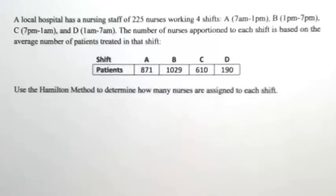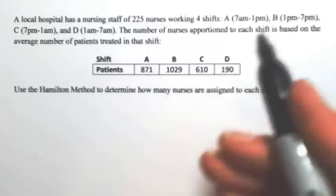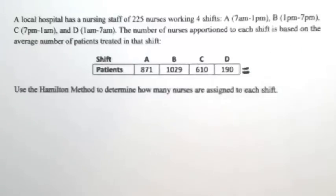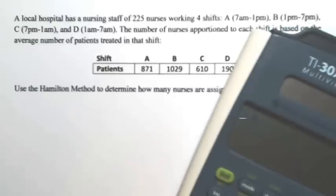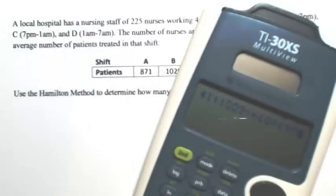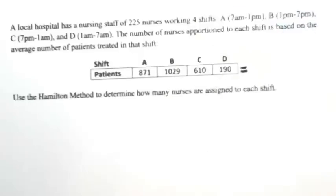So the first thing we need to do is figure out how many patients there are altogether. So we're going to add up all of the number of patients from each shift. So 871 plus 1,029 plus 610 plus 190 gives us a total of 2,700 patients.